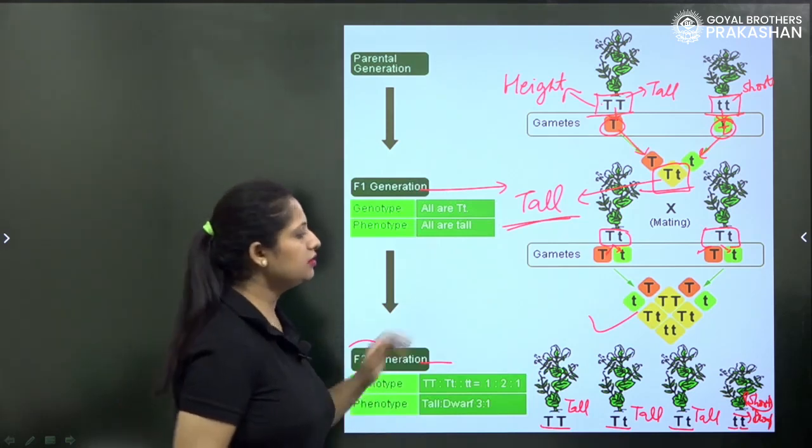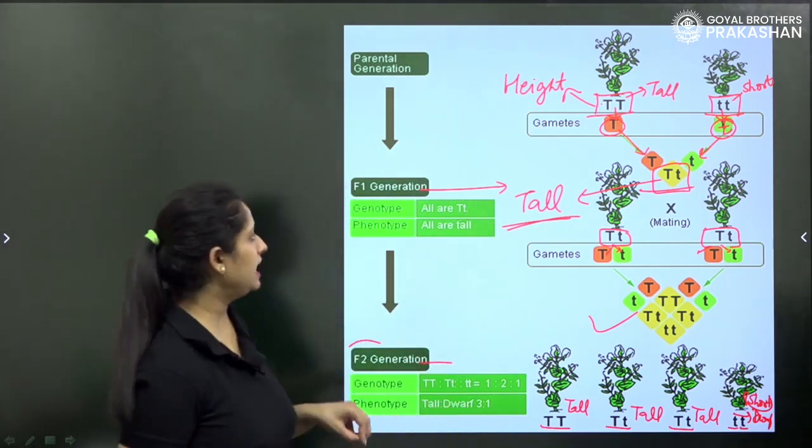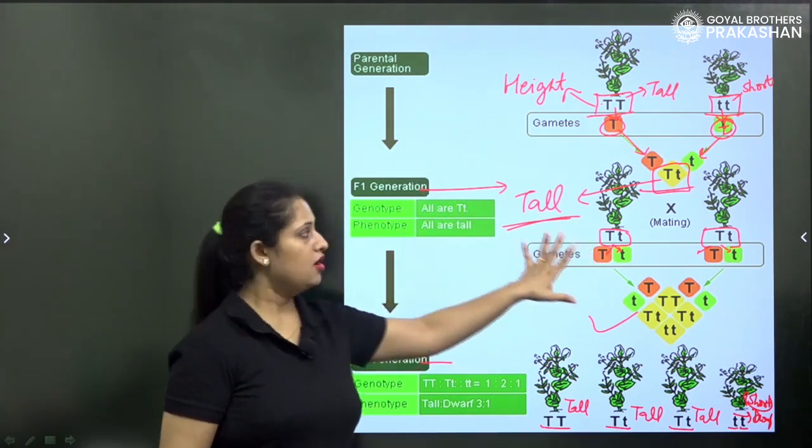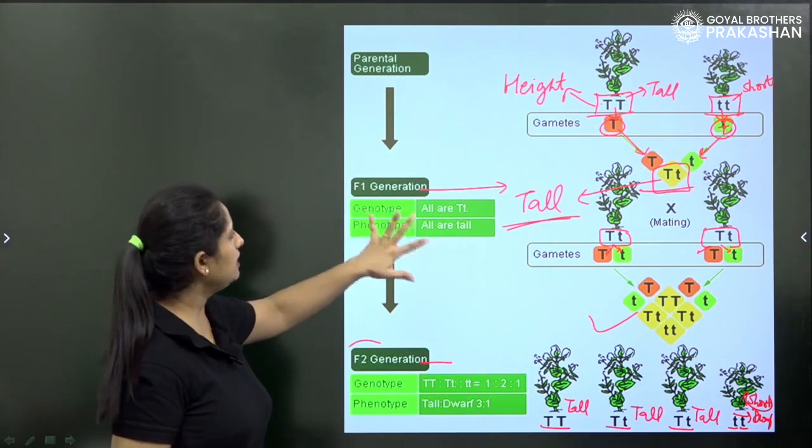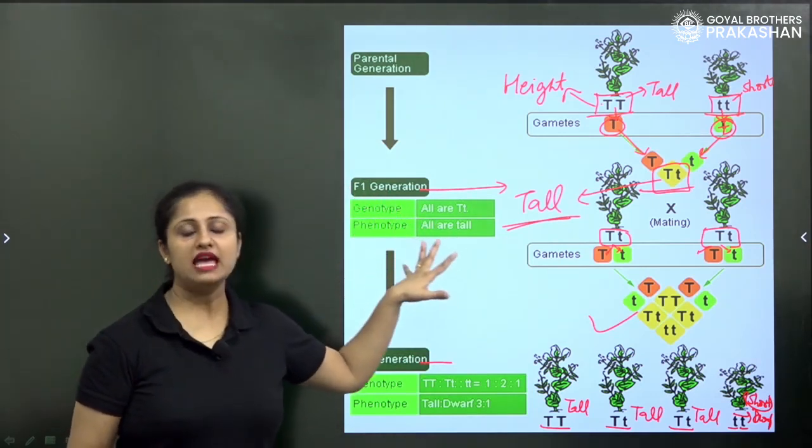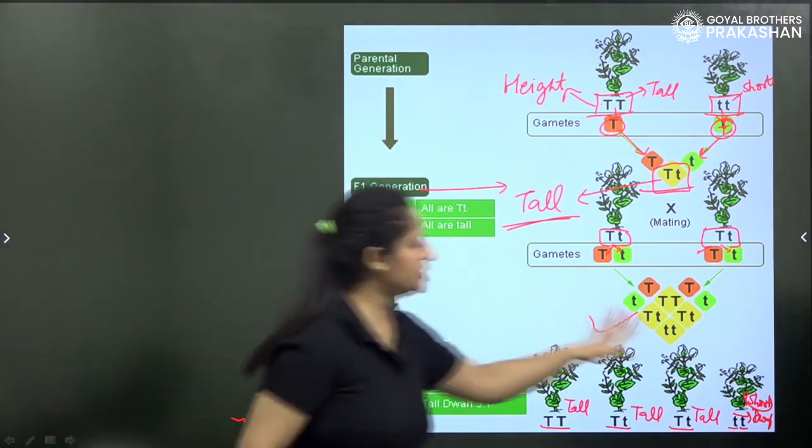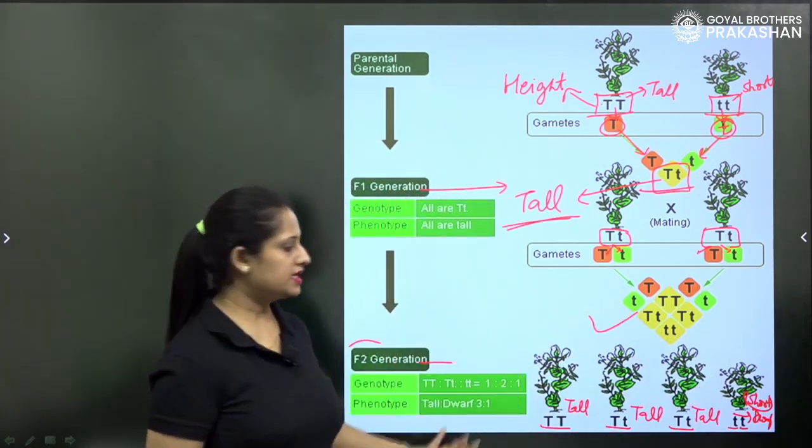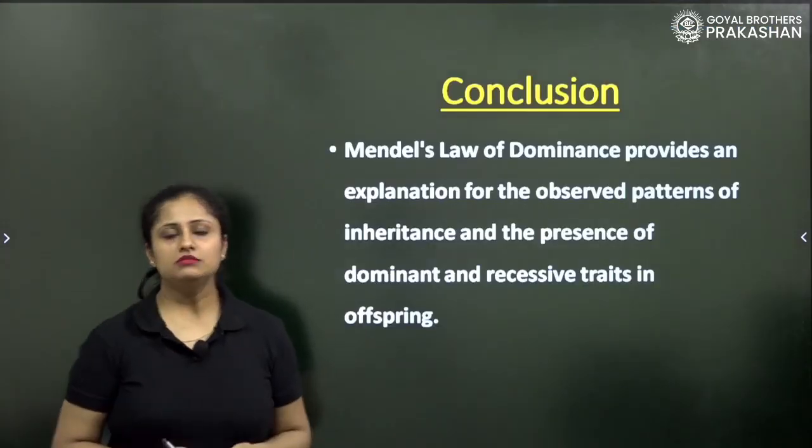We have seen in the monohybrid cross, Mendel concluded that during F1 generation all the progeny were tall. But when he made a cross or self-pollination was done among the F1 generation, then in F2 generation not all progeny were tall. Some of them were short also. So let's come to the conclusion.